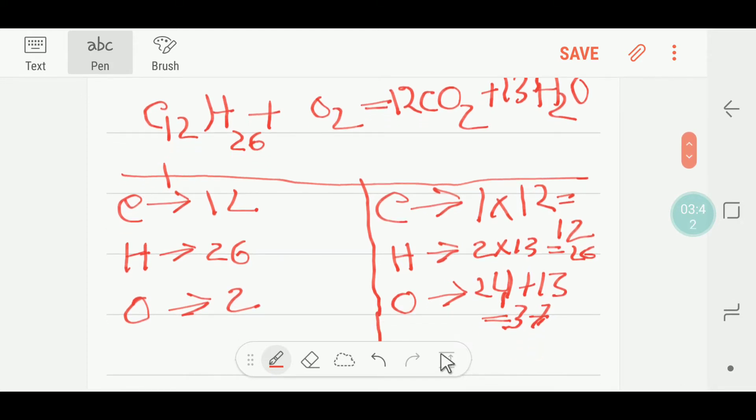To balance the oxygen here, I have to apply a trick. I can multiply here by 13 by 2, then these two will cancel out each other and we'll get only 13. So this 13 over 2 will come before this oxygen, that is here.